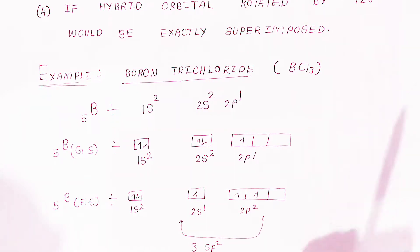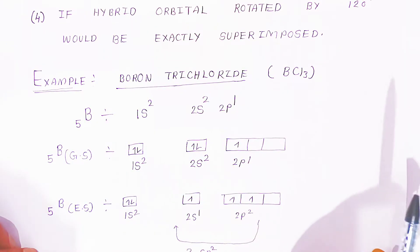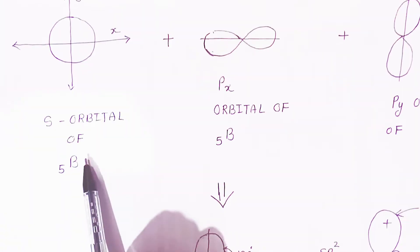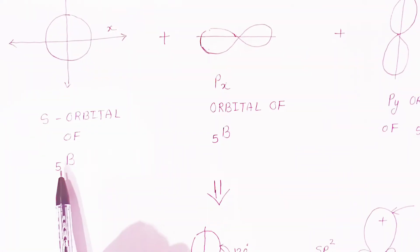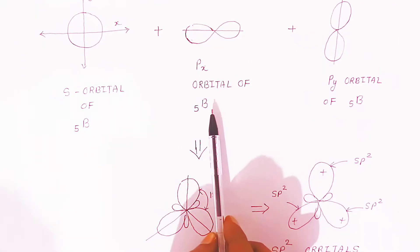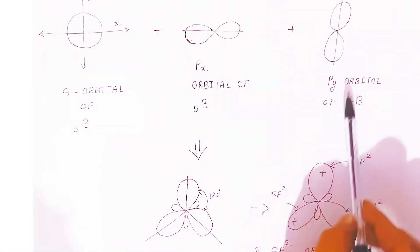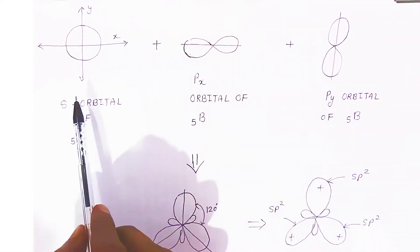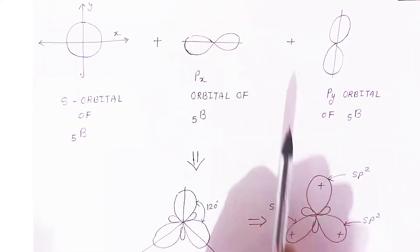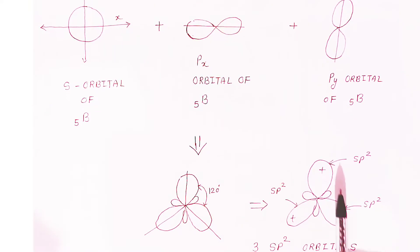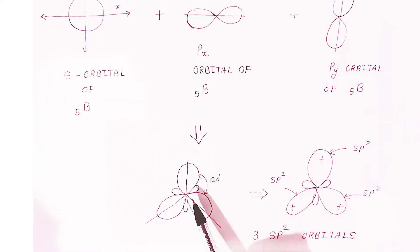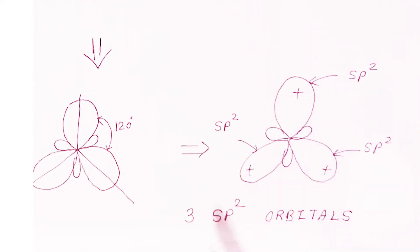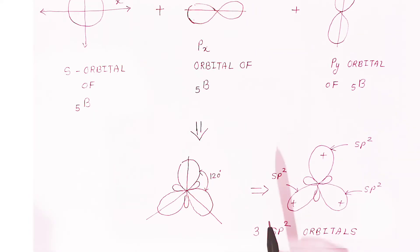These are the three sp2 hybrid orbitals of boron. In the three-dimensional diagram, this is the s orbital of boron, this is the px orbital of boron, and this is the py orbital of boron. All these s, px, and py orbitals hybridize and form three sp2 hybrid orbitals — one, two, three. So these are the three sp2 hybrid orbitals of boron.